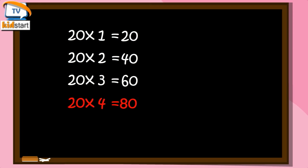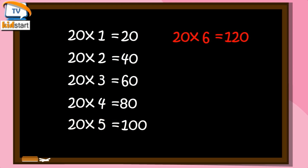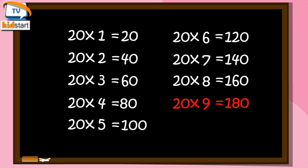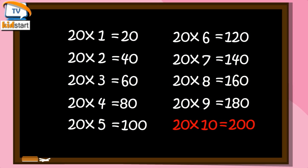20 fours are 80. 20 fives are 100. 20 sixes are 120. 20 sevens are 140. 20 eights are 160. 20 nines are 180. 20 tens are 200.